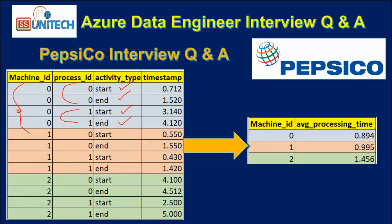How can we calculate the average processing time? To get it, we first need to take the difference from end to start. Let's say we get value X for one process ID and value Y for another process ID under the same machine. Once we have X and Y, we can take the average based on machine ID using group by — and that average will be the average processing time.